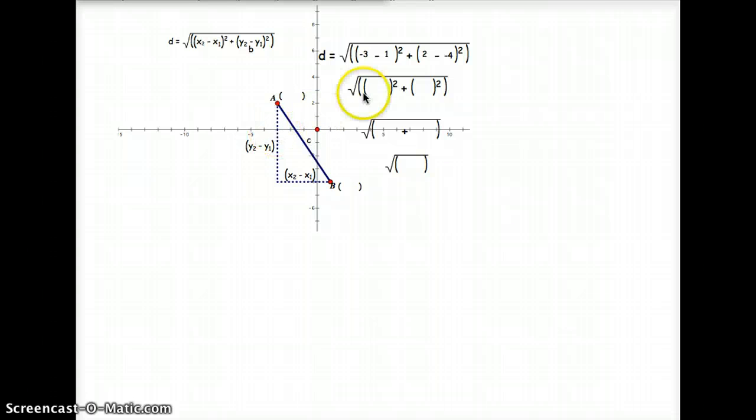Our A value is located over at 1, 2, negative 3. So negative 3. And our y value for A is 1, 2. So in our first blanks, in the parentheses, put negative 3 and positive 2.